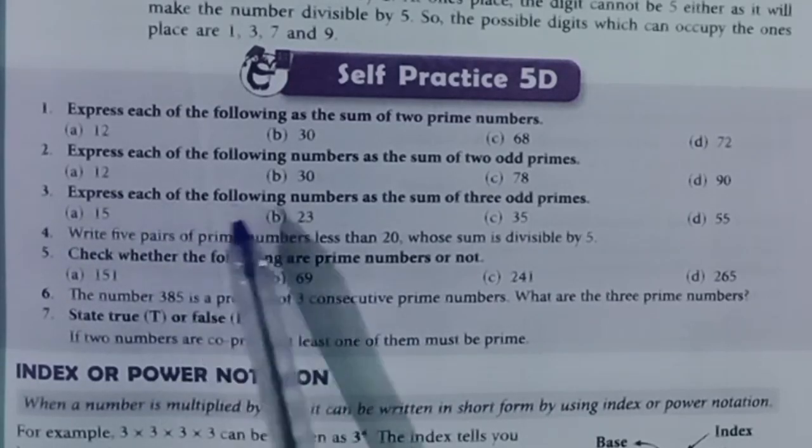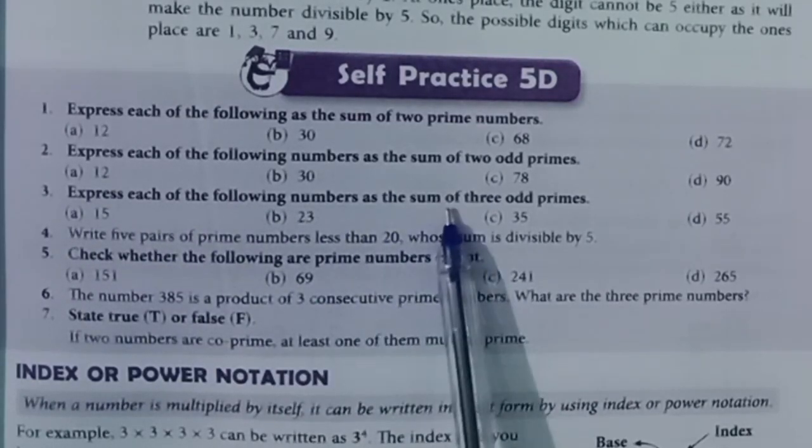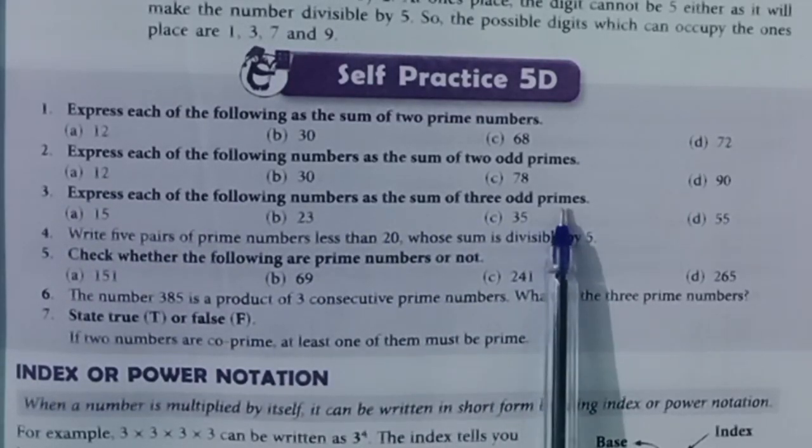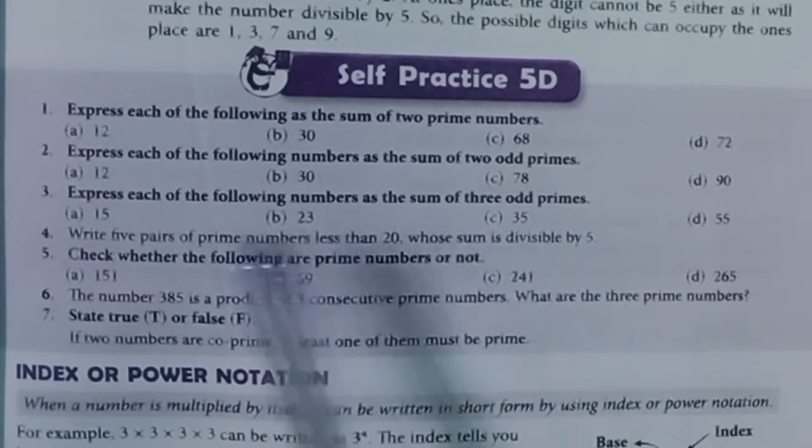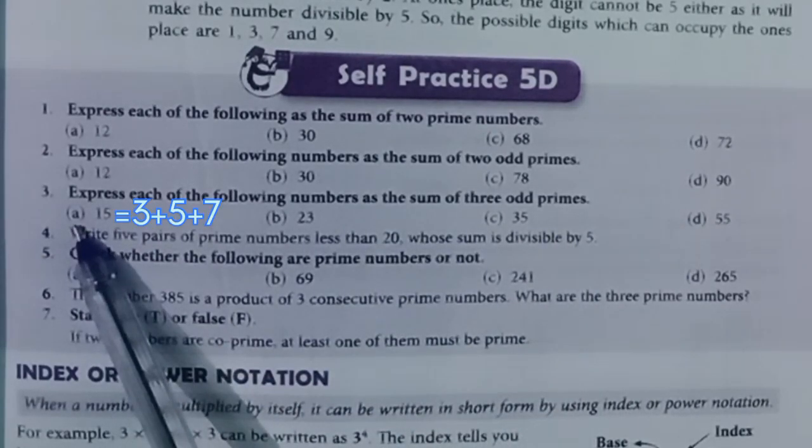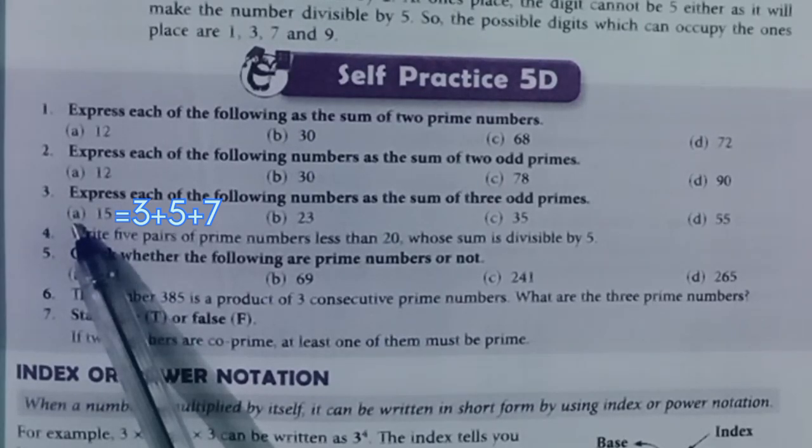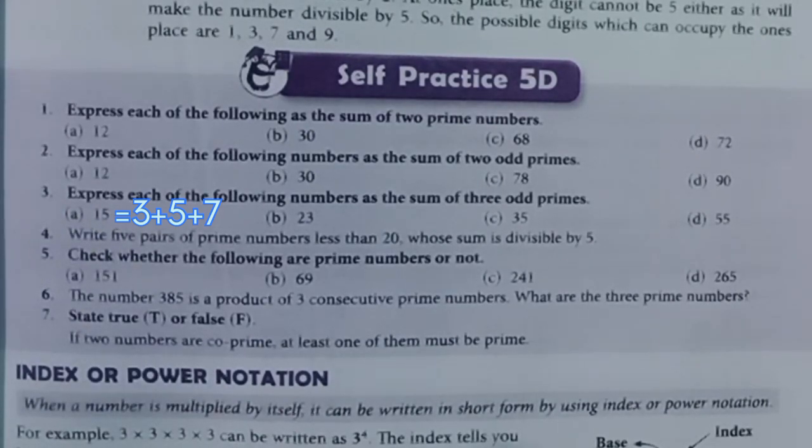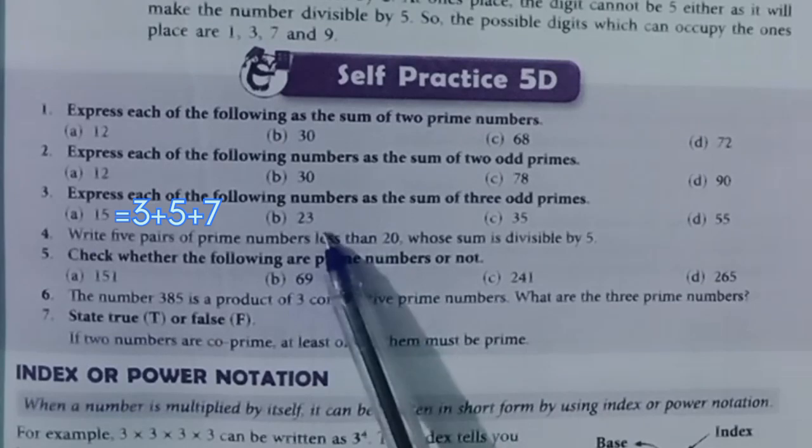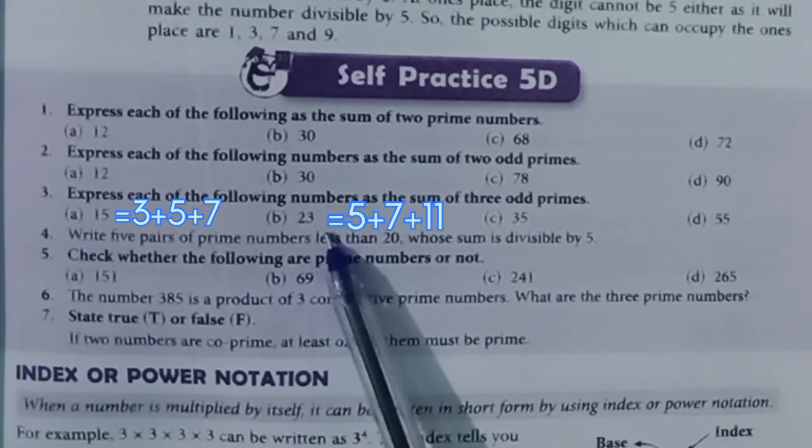Question 3: Express each of the following numbers as the sum of three odd primes. A. 3 plus 5 plus 7. B. 5 plus 7 plus 11.